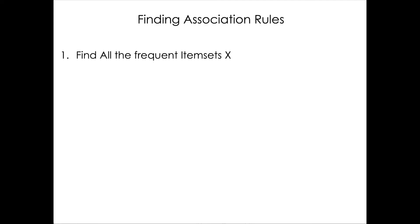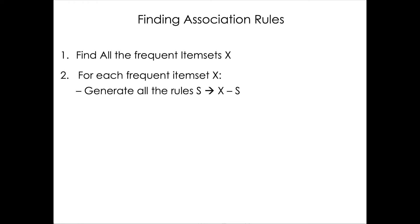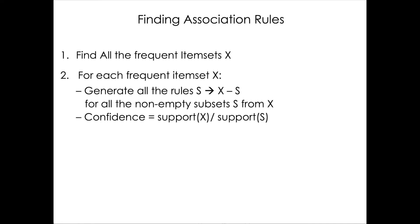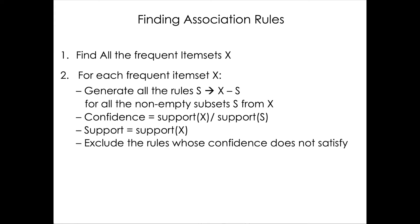To find association rules, the first step is to find all the frequent item sets. Then, for each frequent item set, we generate all rules of the form s implies x minus s — that is, all rules going over all non-empty subsets of x. We calculate the confidence of each rule and exclude any rules whose confidence does not satisfy the minimum threshold.